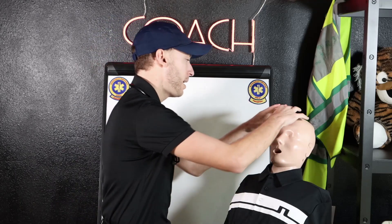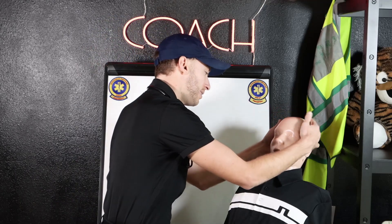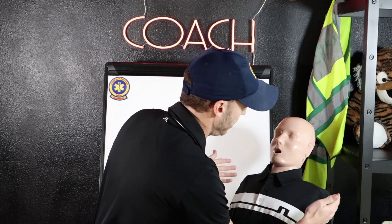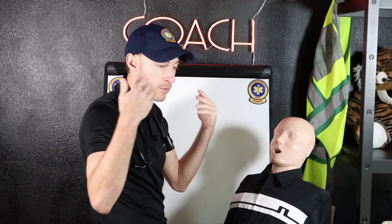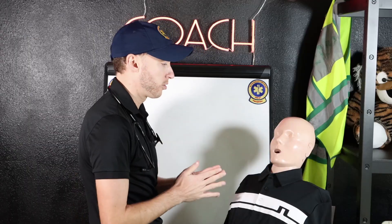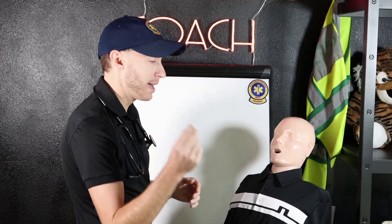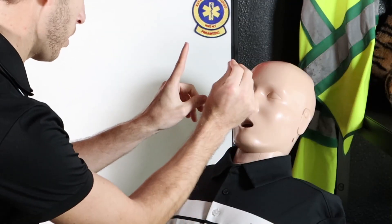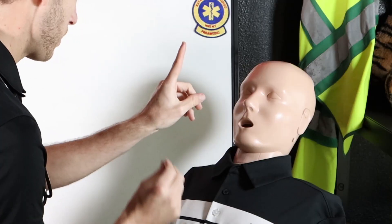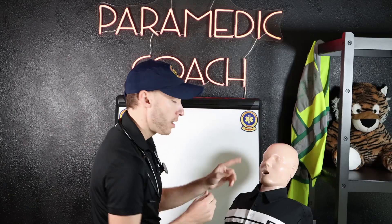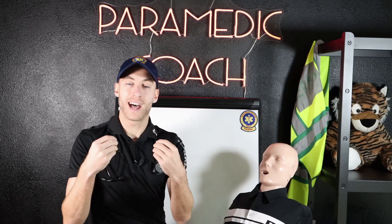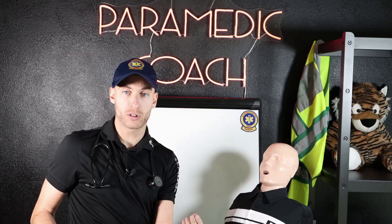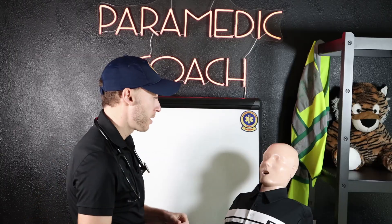I start with the head — I'm looking for any DCAP-BTLS. I'm looking at the ears for anything coming out, any fluid. I have my pen light. I'm looking for the size of the pupils — are they reacting to the light? Are they constricted or dilated?